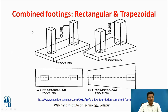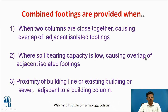Combined Footings can be Rectangular Combined Footing or Trapezoidal Combined Footing. This is a 3D view and this is a plan for a Rectangular Combined Footing. This is a 3D view and this is a plan of a Trapezoidal Combined Footing. Combined footings are provided when the two columns are quite close together, which may cause overlap if isolated footings are designed.